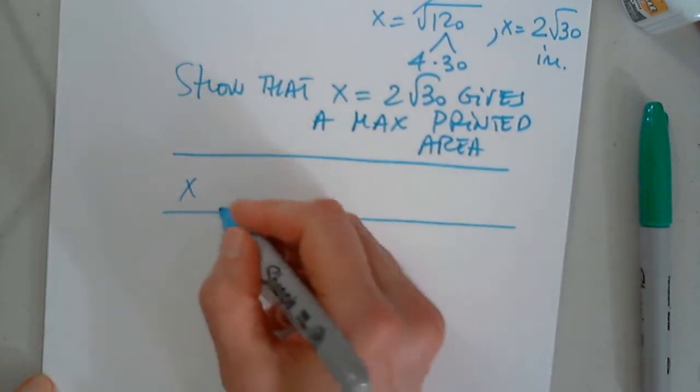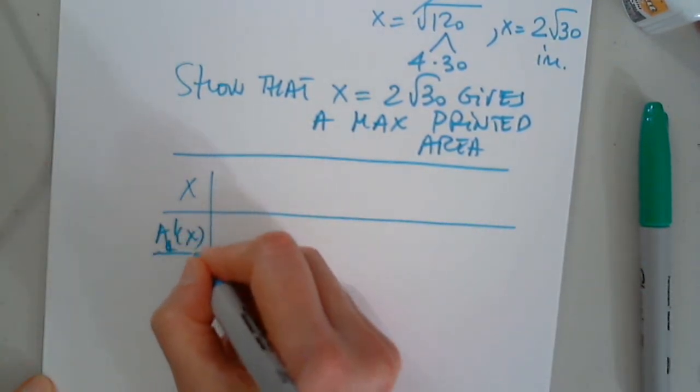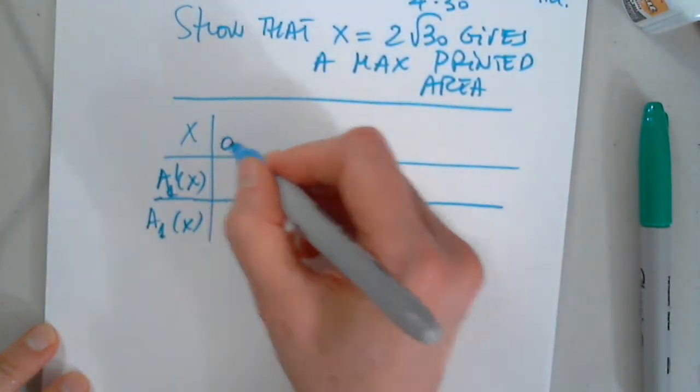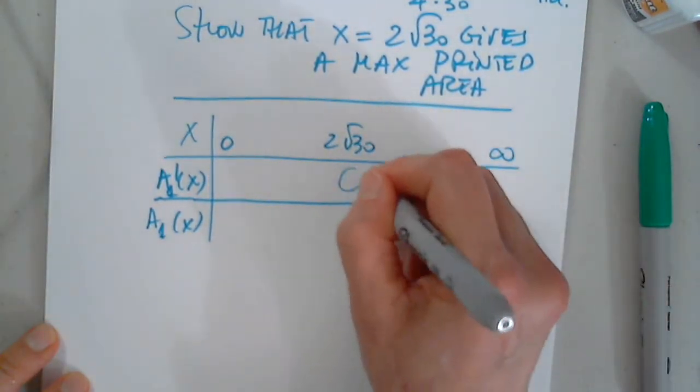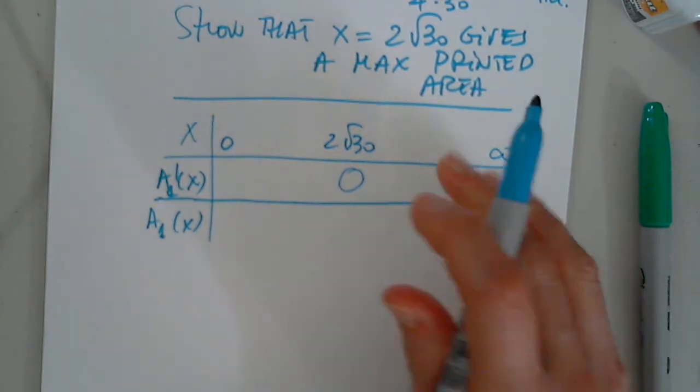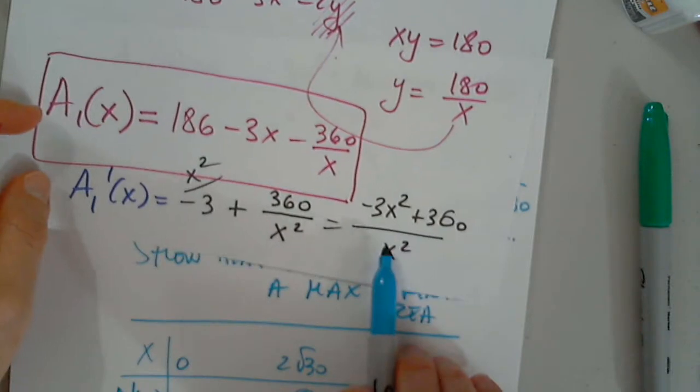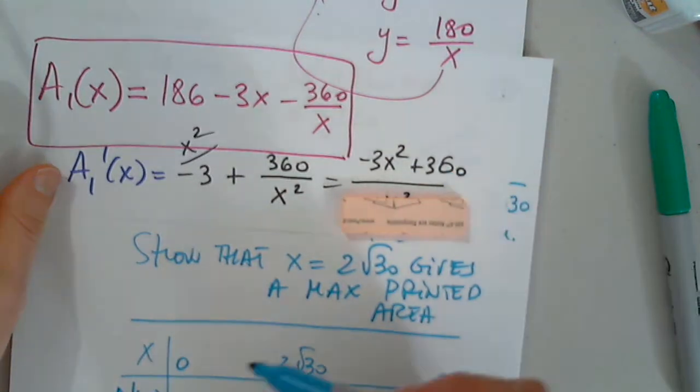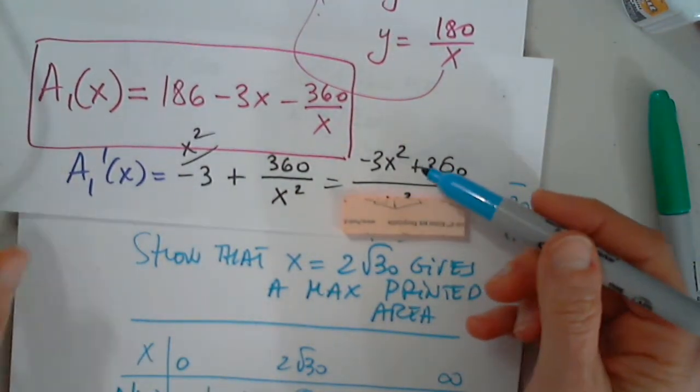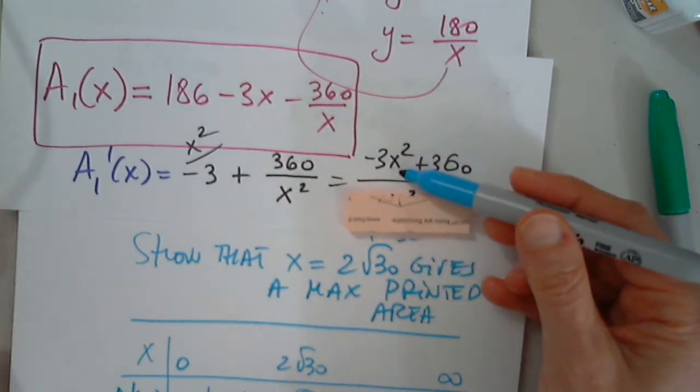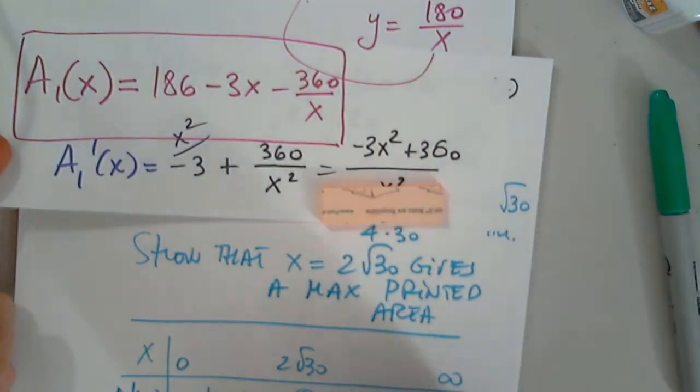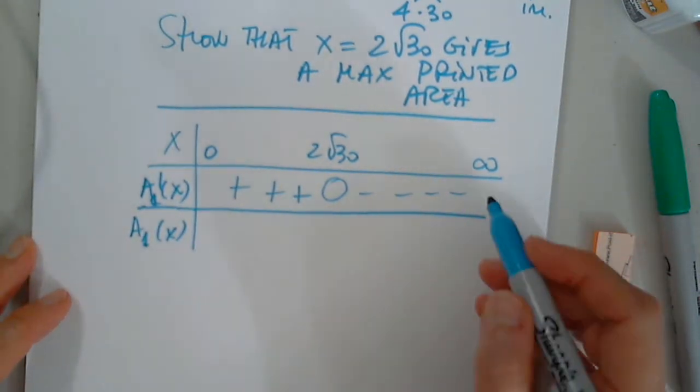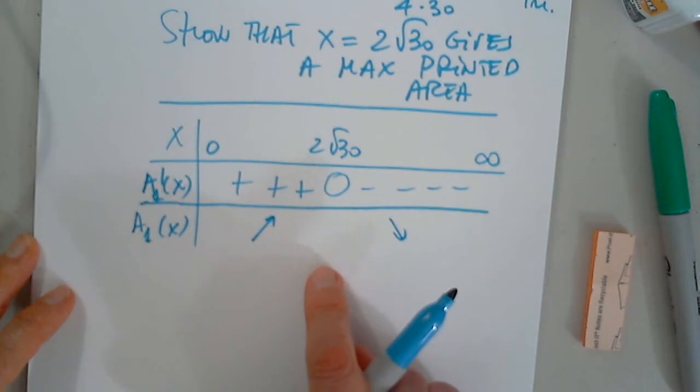So this is X. This is A prime. A1 prime, of course. And A1. So 0 to the square root of 30. Of course, that's not possible. 0 here. So I have to look at the sign now. So I'm not going to waste my time with the denominator. When I plug in 0, positive. On the other side, when I replace X by 100, 100 squared, this will definitely be negative. So although you can say, but this is a formality, it is, but we have to show it. So obviously, it's guaranteed to be a maximum.